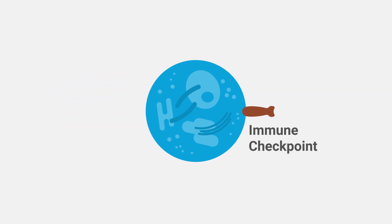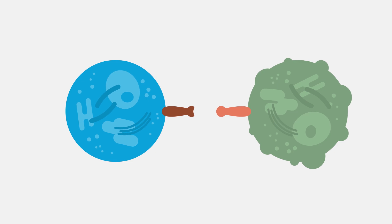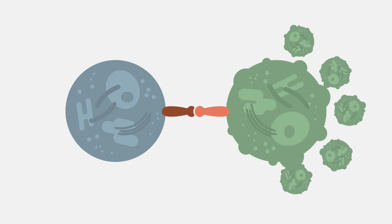Immune checkpoints are receptors on the surface of T cells that can inhibit T cell activity. Some cancer cells trick T cells by displaying ligands that interact with immune checkpoints. This is like stepping on the brakes of the T cell, telling it to stop. This allows the cancer cell to avoid destruction.